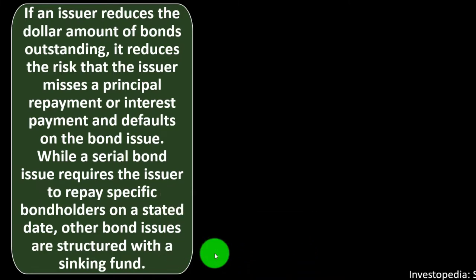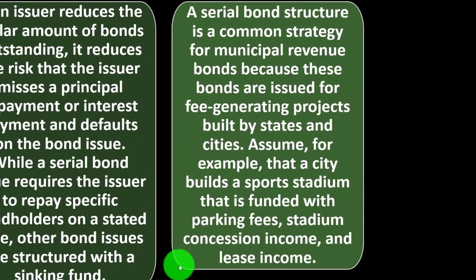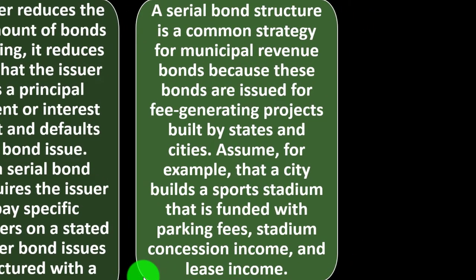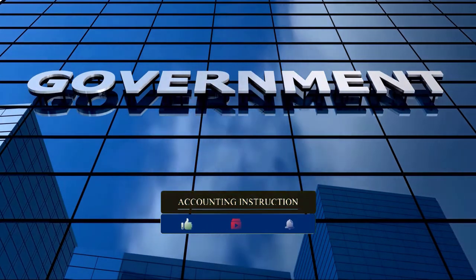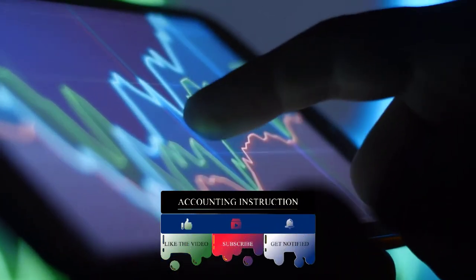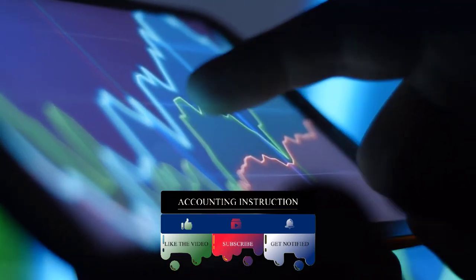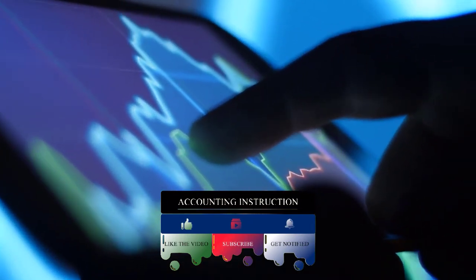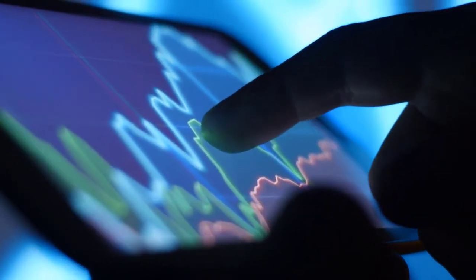A serial bond structure is a common strategy for municipal revenue bonds, because these bonds are issued for fee-generating projects built by states and cities. Municipal bonds are types of government bonds — state and local — and those can be used to construct things. They can have fee-generating projects, and that can be a good basic structure for this kind of serial bond construction in order to finance the creation of those projects.